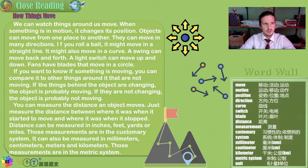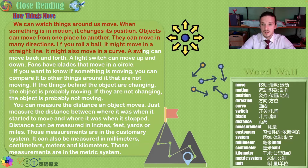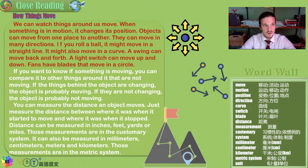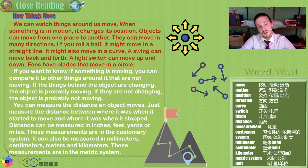How things move. We can watch things around us move. When something is in motion, it changes its position. Objects can move from one place to another and in many directions. If you roll a ball, it might move in a straight line or in a curve. A swing can move back and forth. A light switch can move up and down. Fans have blades that move in a circle.